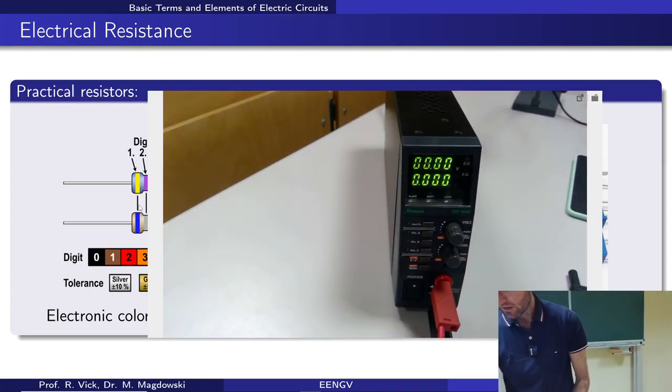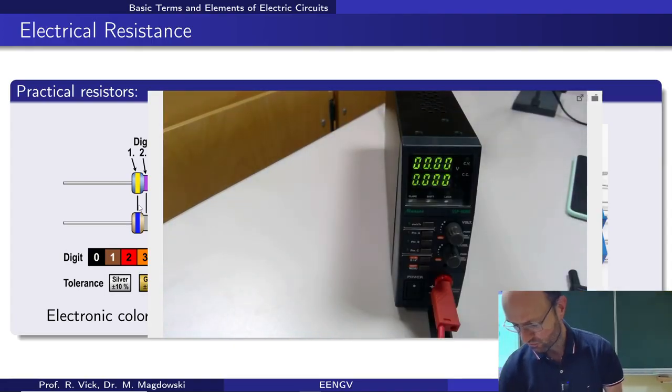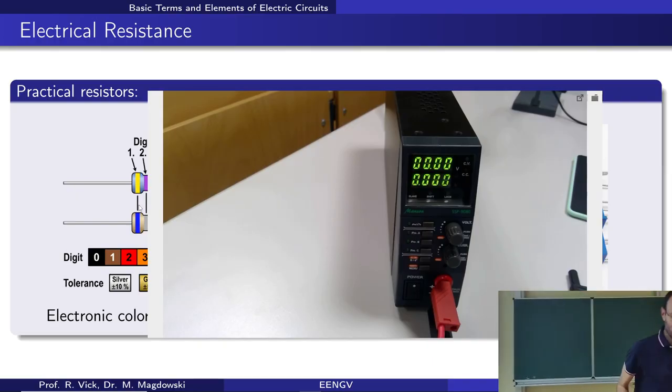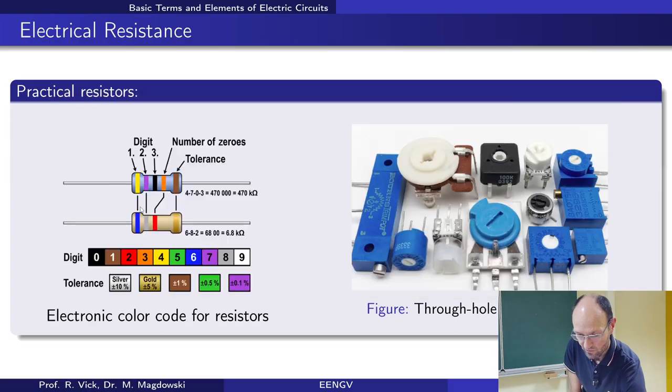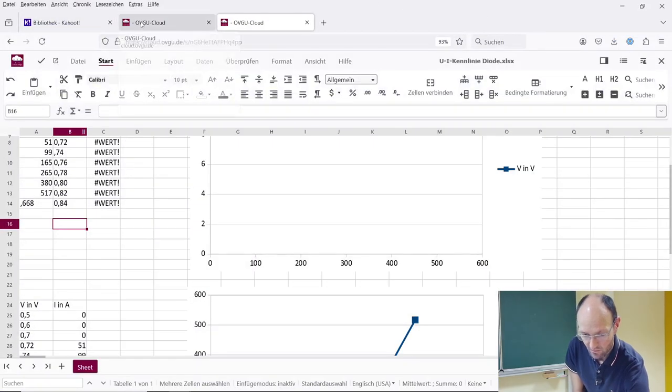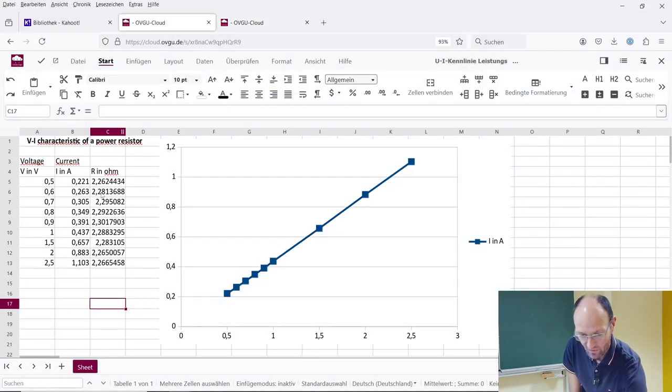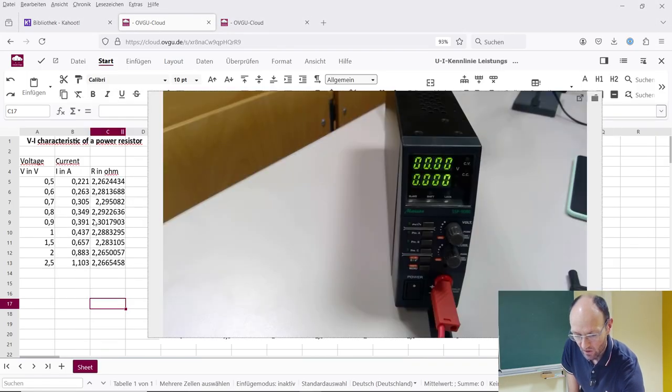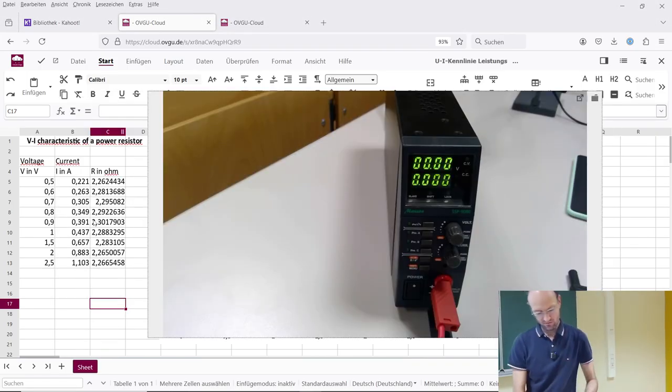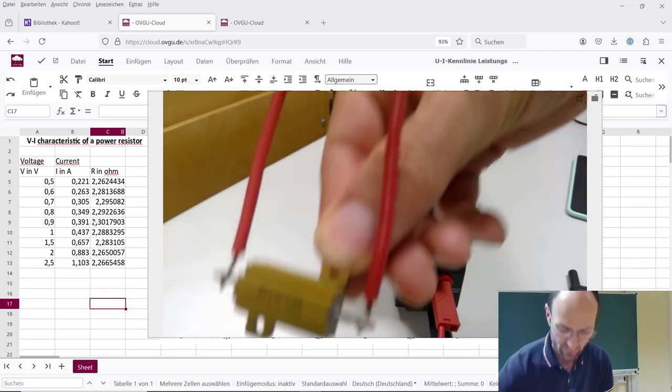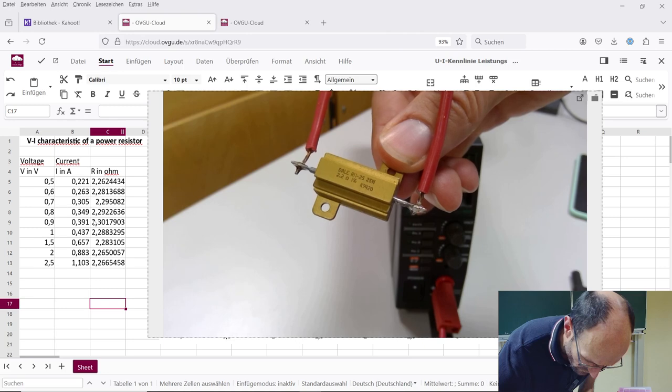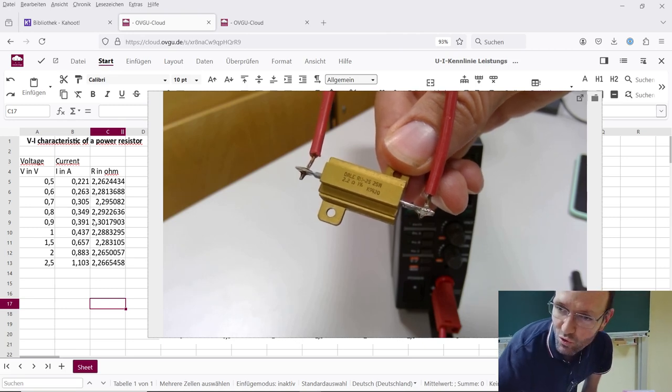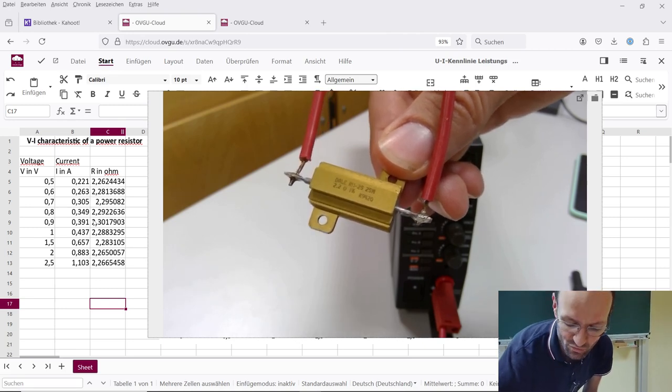And what I forgot to show you is for the power resistor that we measured, the resistance that we got here was something like 2.2, 2.3 ohms. There you can see it's 2.2 ohms, so this fits to what we have measured.